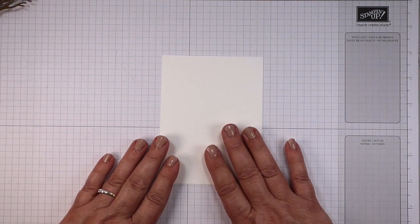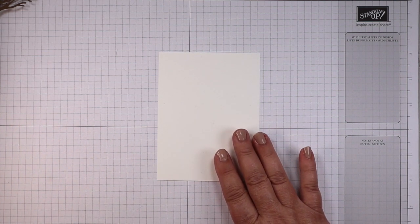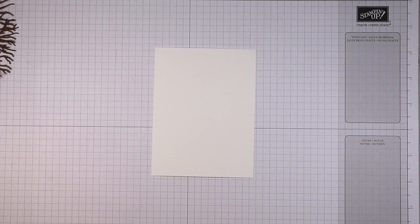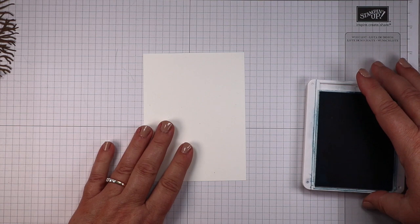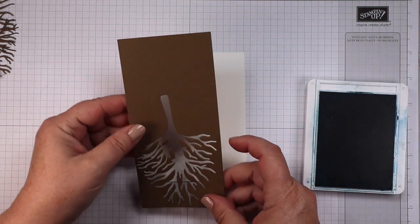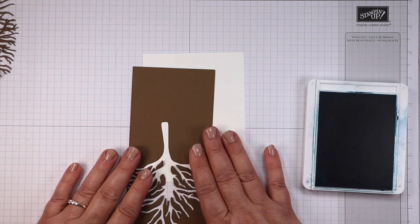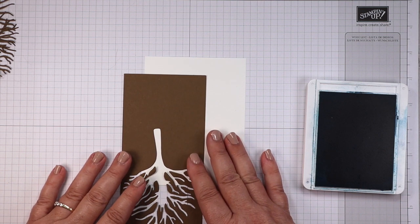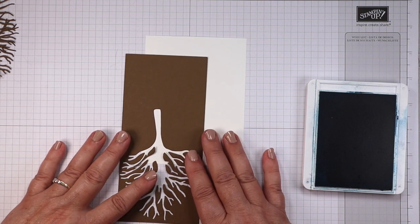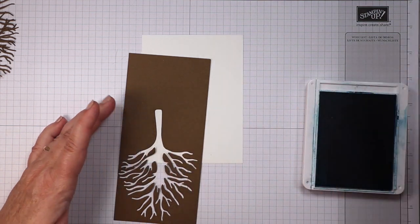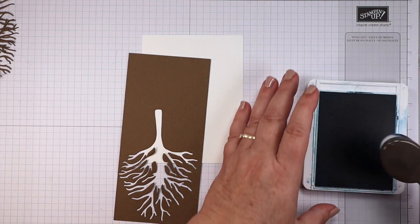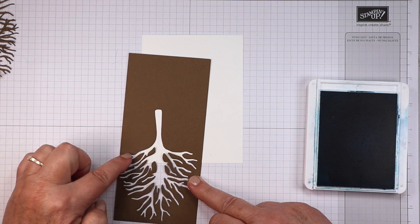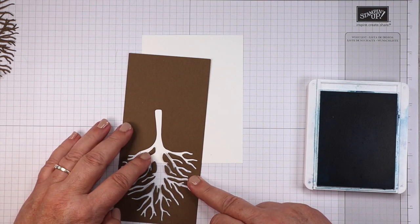So this main image panel is three and three quarters by five and we're going to start with actually putting in the reflections first. We're going to get our little template here that we cut our trees out of and we're going to sponge this in using a blending brush and balmy blue ink. I'm putting it on the cardstock just so that the very bottom branches are showing.